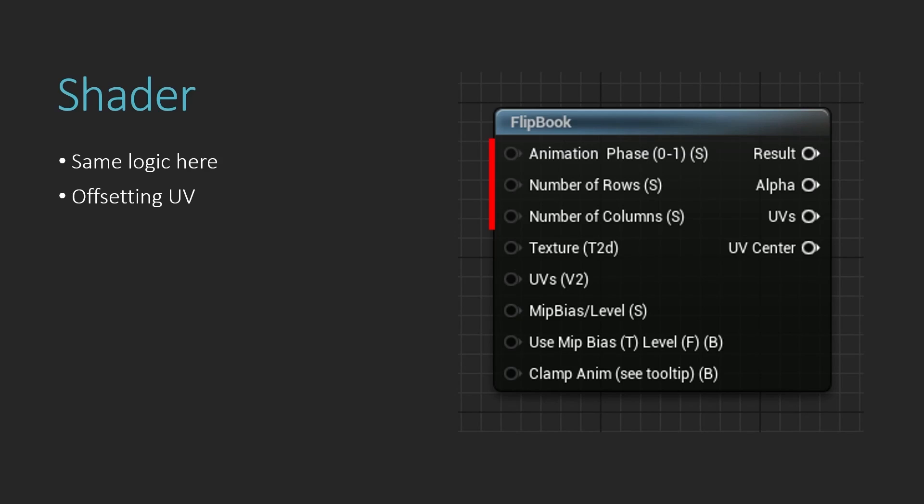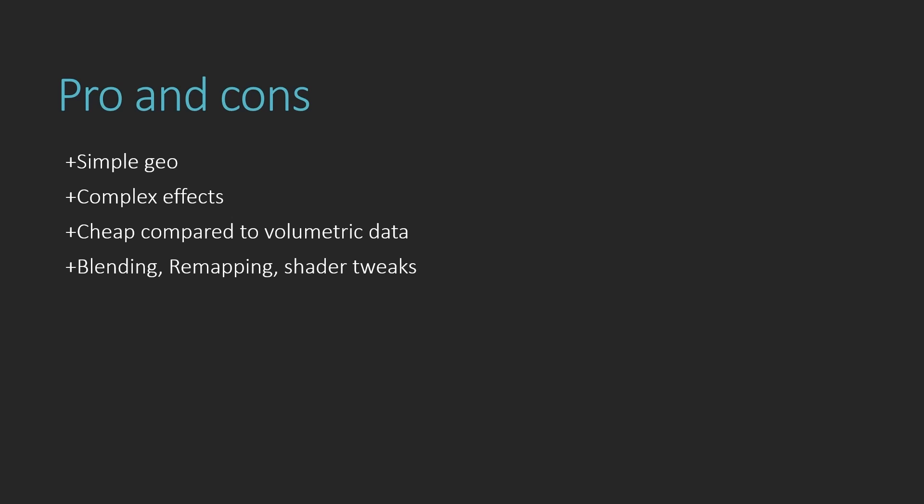Let's discuss some pros and cons of using the flipbook technique. We use simple geometry — a plane, or maybe a plane with bends or twists — to display the effect. This lets us have complicated effects like fire or smoke simulation in the game engine at a cheaper cost. It's also cheaper compared to using volumetric data like importing a VDB, which isn't even supported by default in all game engines. We can also do blending, remapping, and other shader tweaks — playing around with color variation and blending different frames together.